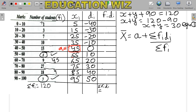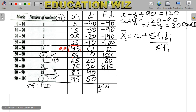Next step is to compute f_i × d_i for each row: 1×(−40)=−40; 3×(−30)=−90; 7×(−20)=−140; 10×(−10)=−100; 15×0=0; x×10=10x; 9×20=180; 27×30=810; 18×40=720; y×50=50y.